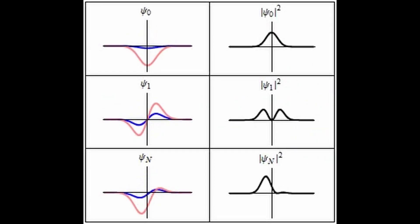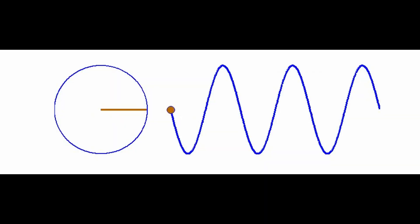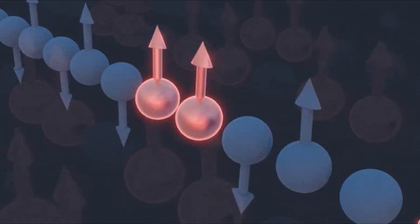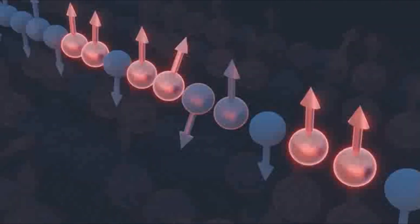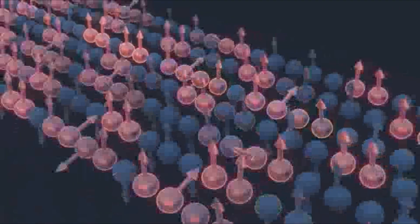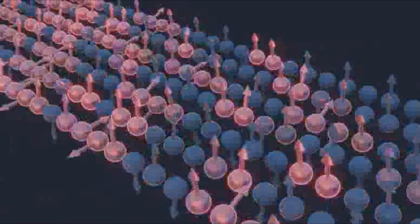Symmetry is important in physics because it implies conservation laws. For example, the symmetry of space translation, meaning that the laws of physics are the same everywhere, implies the conservation of momentum. The symmetry of time translation, meaning that the laws of physics are the same at any time, implies the conservation of energy. However, symmetry can also be broken, meaning that a system does not have the same property after undergoing a certain transformation.